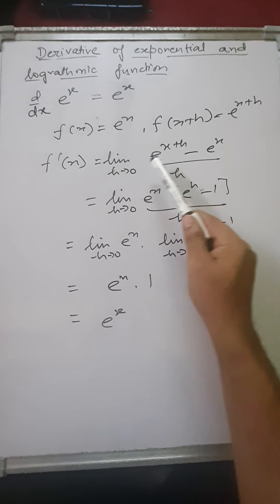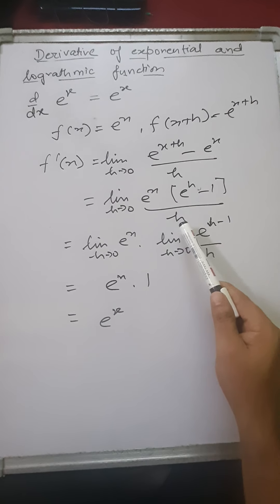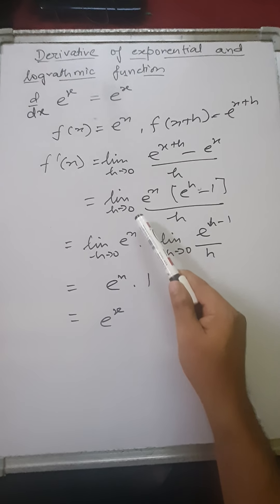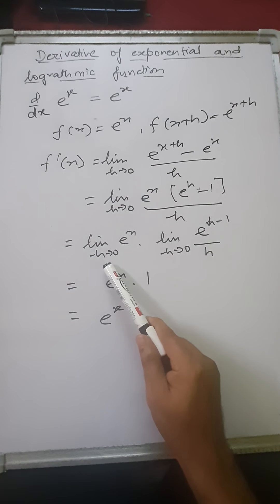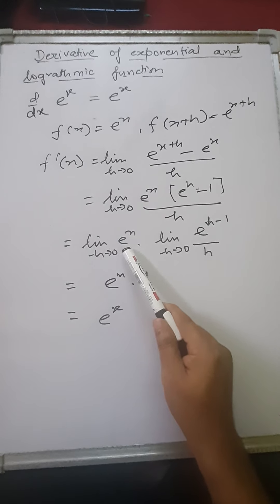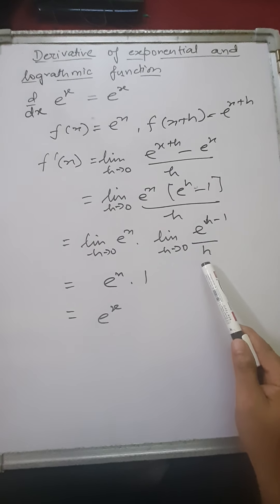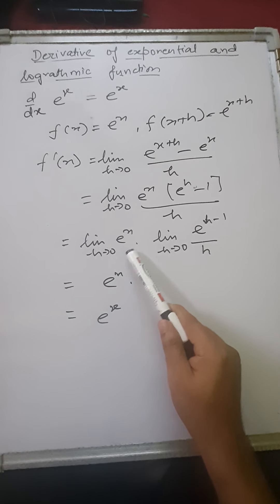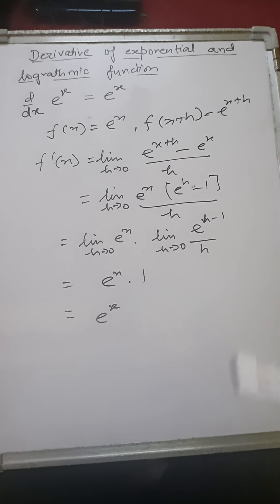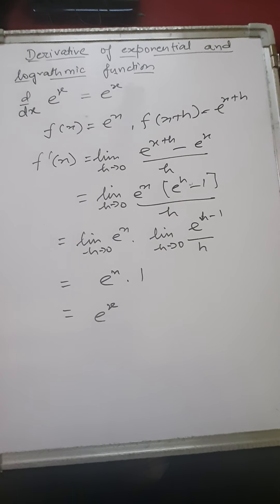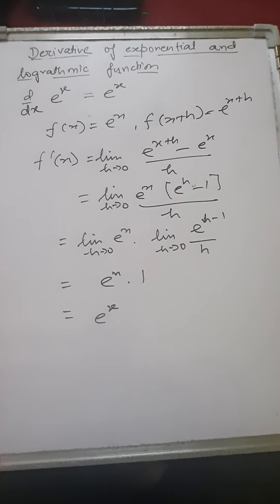We can take e to the power x common from the numerator, leaving e to the power h minus 1, all upon h. From the algebra of limits we apply the limit separately: limit h tends to 0 of e to the power x, into limit h tends to 0 of e to the power h minus 1 upon h. This limit equals 1, so the result is e to the power x.